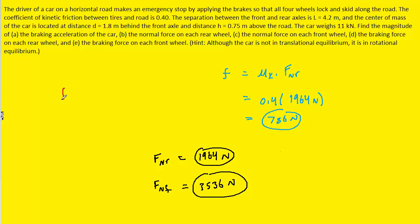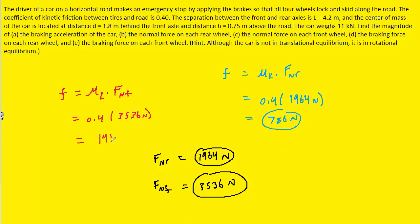For part E, the braking force on each front wheel is similarly the coefficient of kinetic friction times the normal force on the front wheel, which we found to be 3,536 N. This works out to approximately 1,414 N, which is the correct answer to part E.